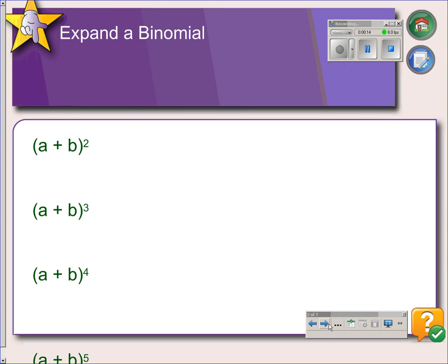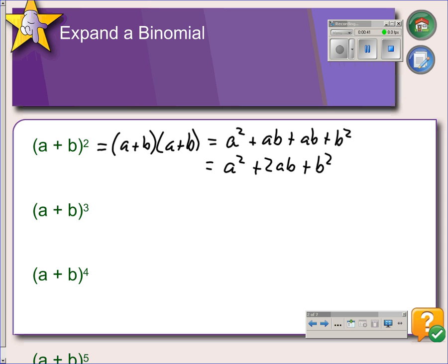First we're going to expand a binomial. If you start with (a + b)² and you expand it, that means to multiply it out, put it in standard form. Squared means we have two of these. And if you FOIL, you get a² + ab + ab + b², which equals a² + 2ab + b².